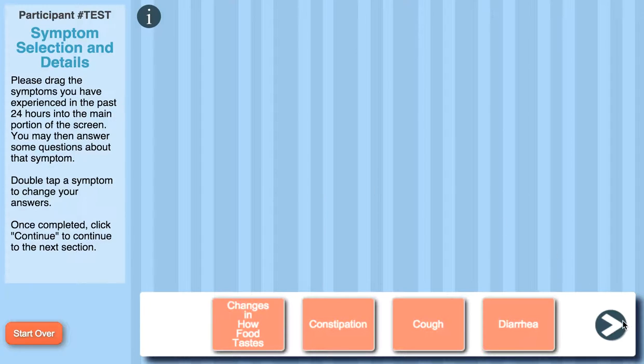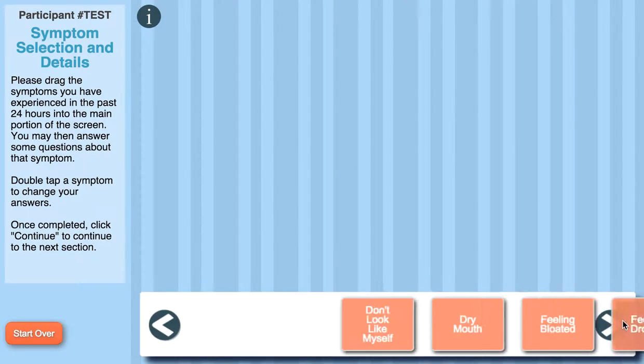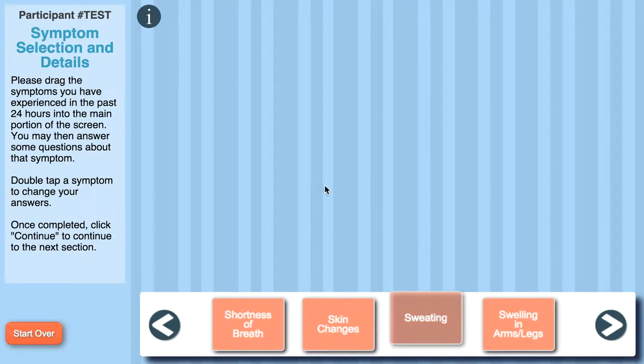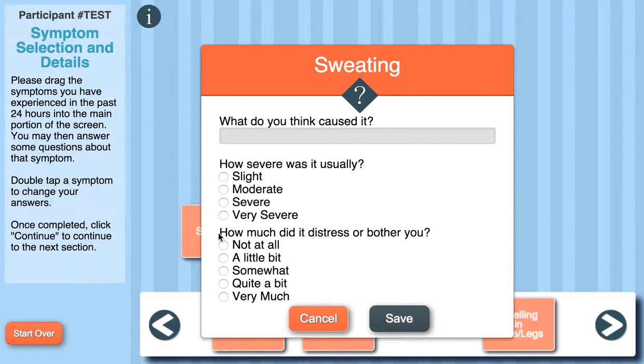For instance, I've been sweating a lot recently, so I'm going to click the button on the right until I find sweating. Then I'll drag and drop it onto the stage where some questions will appear.